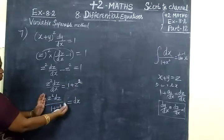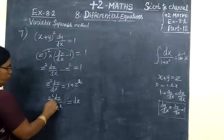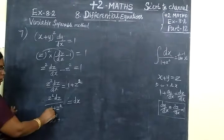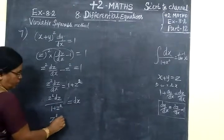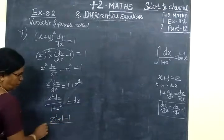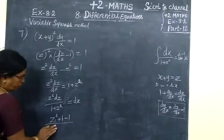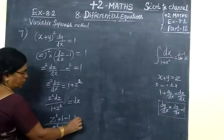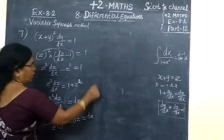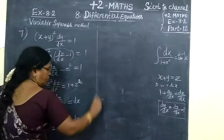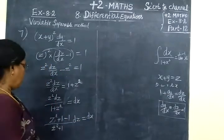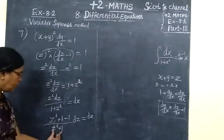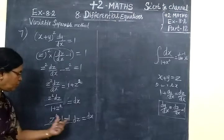Now in the numerator, we add and subtract 1. So z² becomes (z²+1-1). We write this as (z²+1)/(z²+1) minus 1/(z²+1). Now integrating on both sides. Before that, in the z²+1 term: